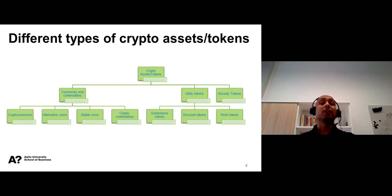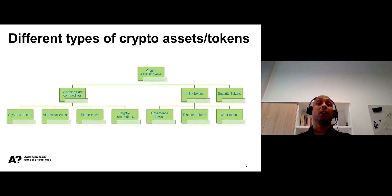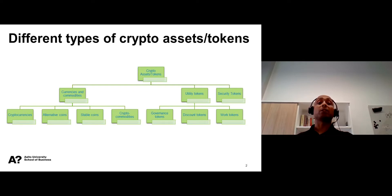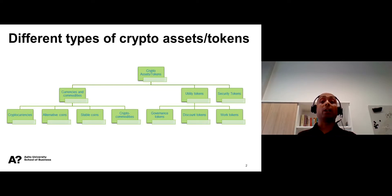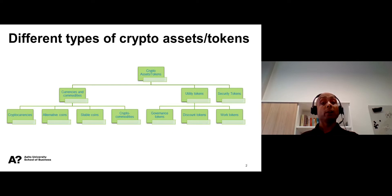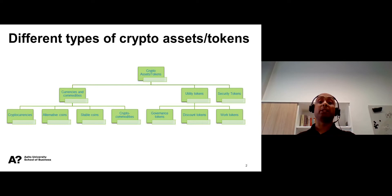In this sense, cryptocurrencies are not traditional currencies such as fiat currencies, which are issued by central banks and supported by governments. One of the most famous cryptocurrencies is Bitcoin. Altcoins, or alternative coins, are the alternative cryptocurrencies that were launched after Bitcoin.